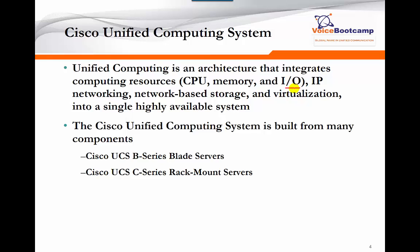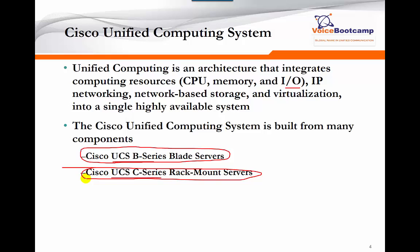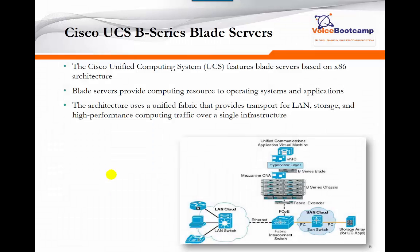Cisco Unified Computing System is built from two components: UCS B-series and UCS C-series. The B-series — B stands for blade — is a chassis-based solution, whereas the C-series is a standalone server, similar to how the Cisco MCS 7800 series server used to be. The B-series server, based on UCS, is a blade server based on x86 architecture. It provides computing resources to the operating system and applications. The architecture uses a fabric that provides transport for LAN, storage, and high-performance computing traffic over a single infrastructure.